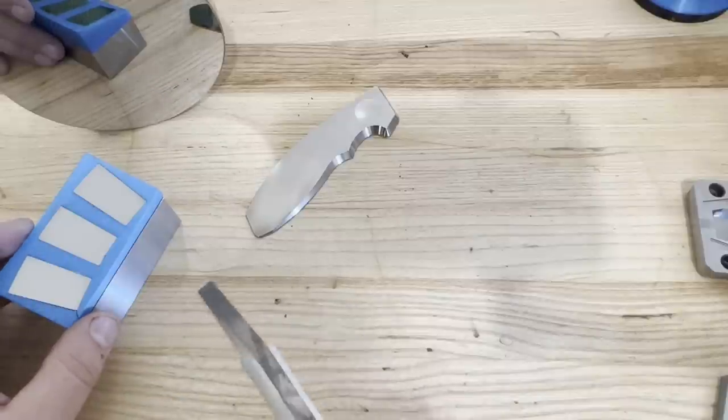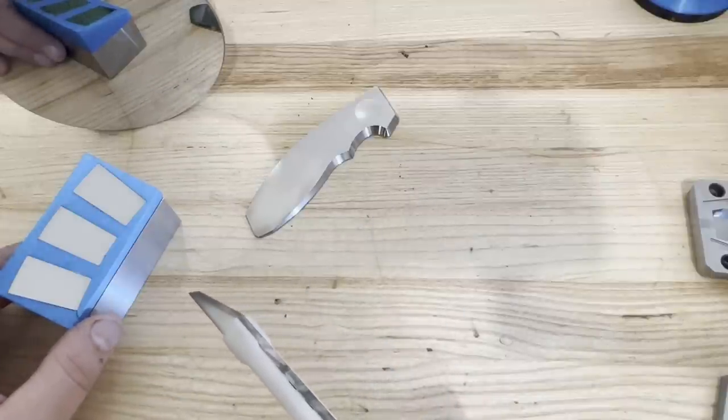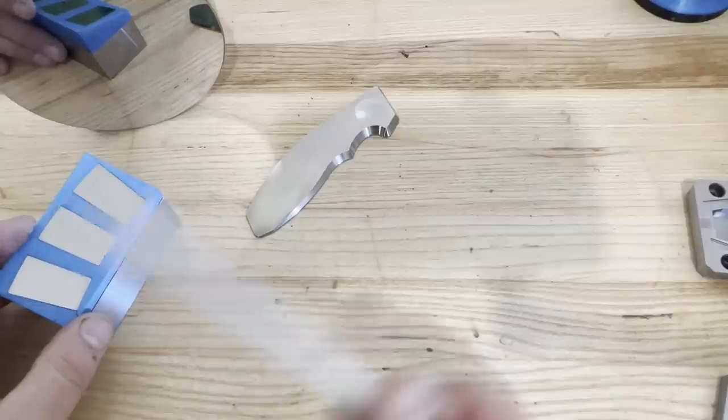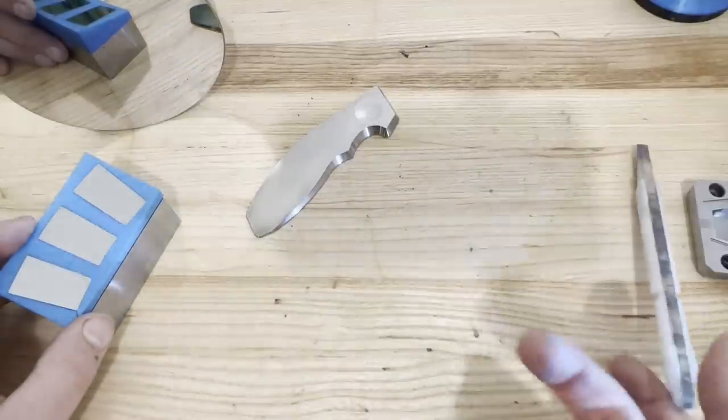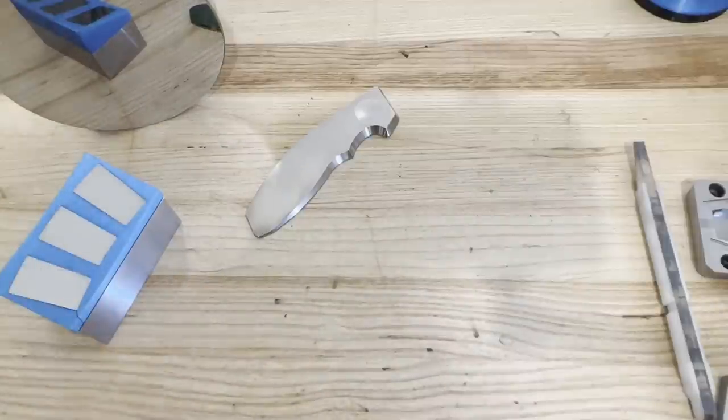The only concern is grit can embed in the plastic. So print several of these and as you change grits, as you're going up in your finish, just discard it. Then you don't have to worry about grit contamination.